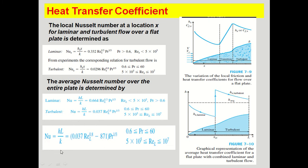To find the average Nusselt number for combined laminar and turbulent flow, the formula is: Nu = h̄L/k = (0.037 · Re_L^0.8 − 871) · Pr^(1/3), valid when Pr is between 0.6 and 60 and Re_L is between 5 × 10⁵ and 10⁷. Using this formula we find the Nusselt number, then substituting the plate length and fluid thermal conductivity we find the average heat transfer coefficient. This is the main formula for heat transfer in parallel flow over a flat plate.